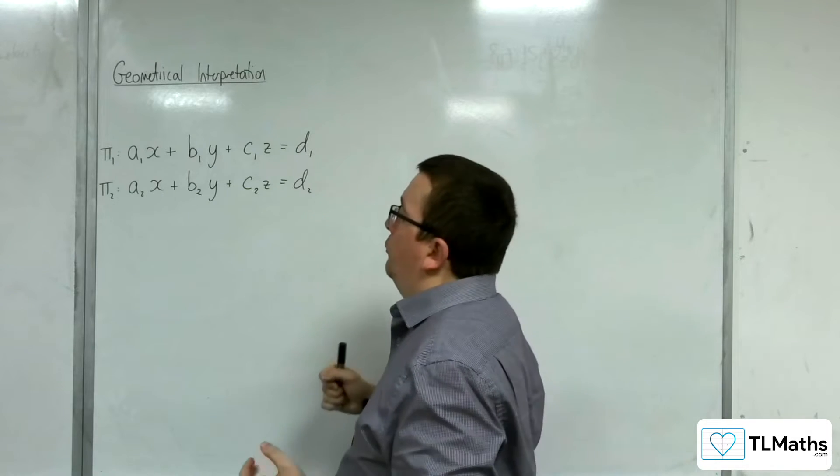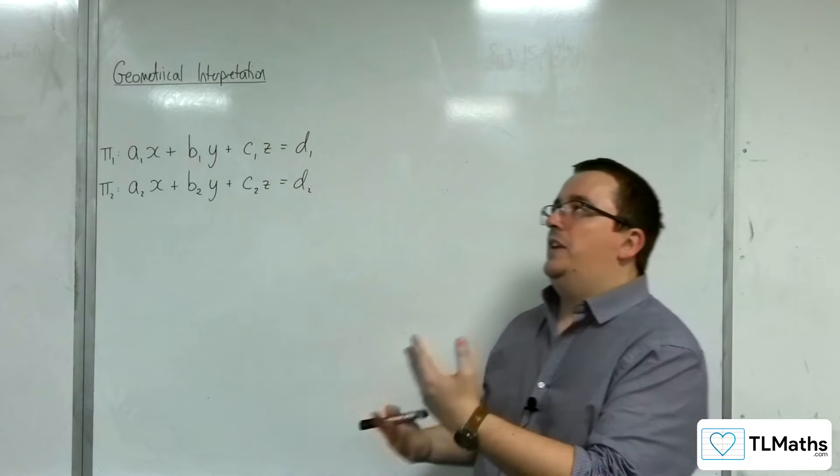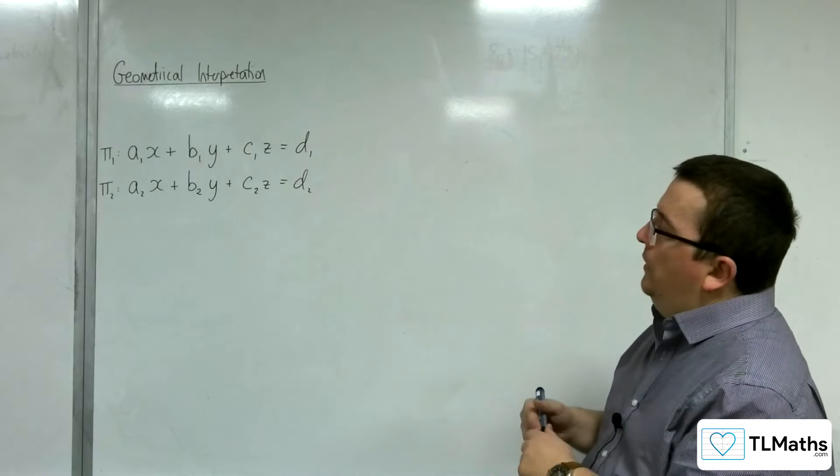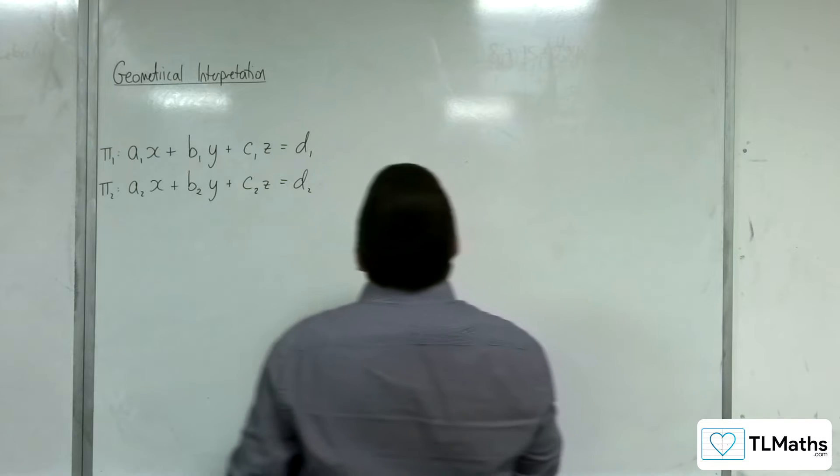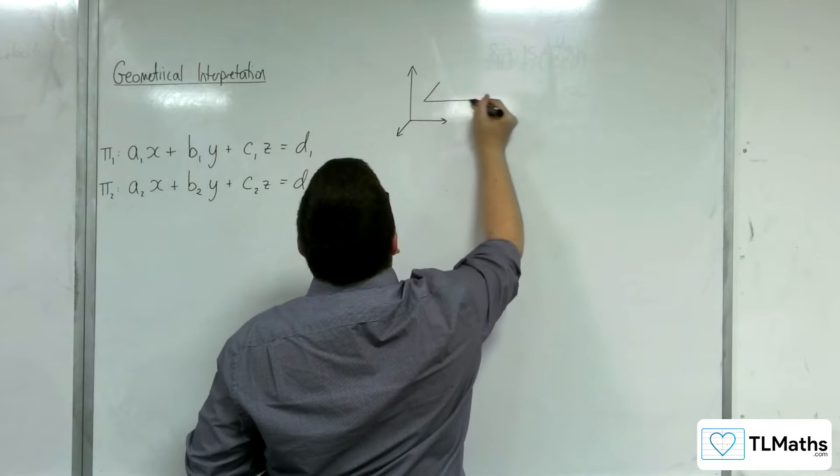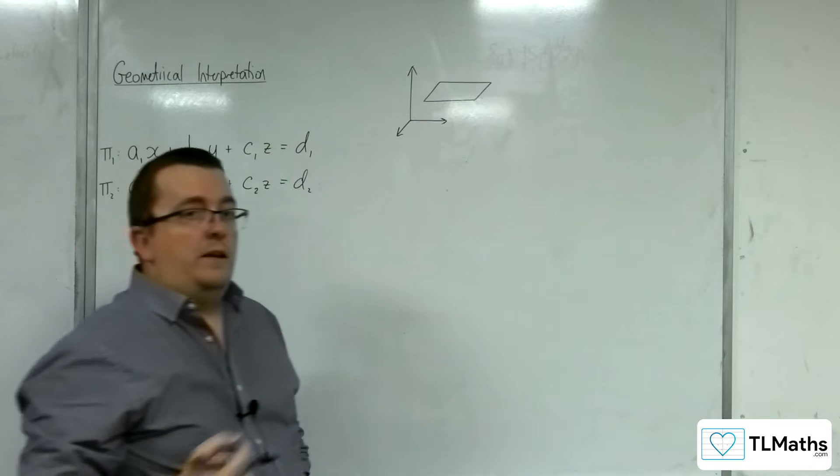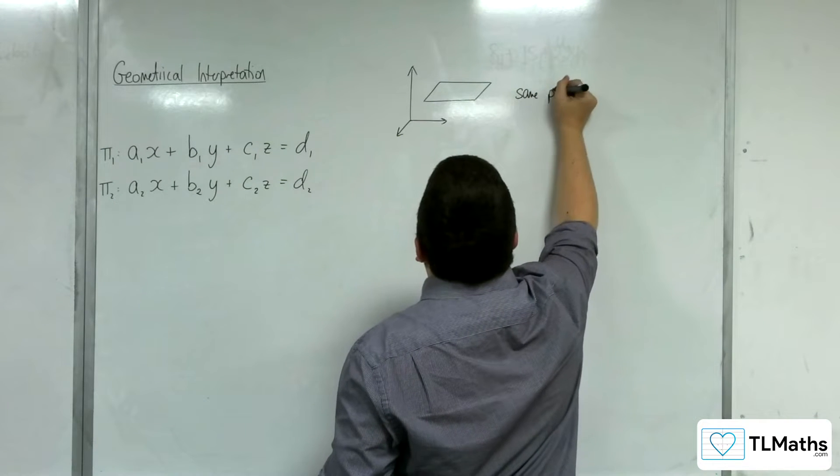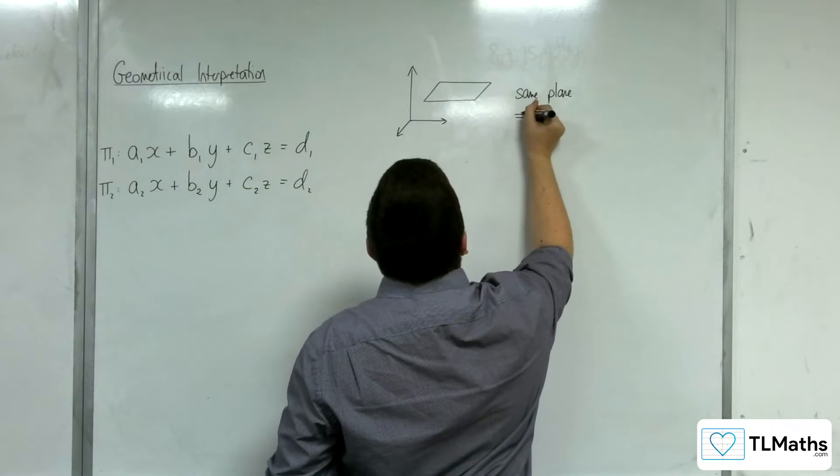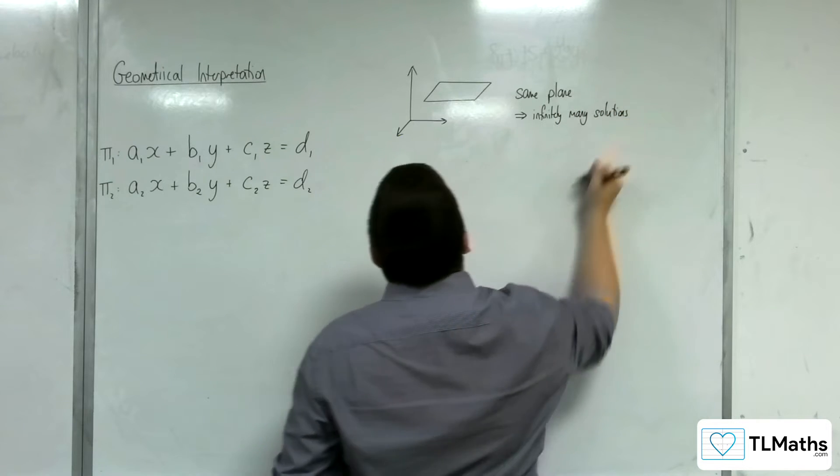So these two equations would represent two separate planes in three-dimensional space. What I want you to start thinking about is how do these two planes interact, what are the possibilities here. If we just have two planes, then one possibility is that your two planes are actually precisely the same plane. It's a trivial situation, but they could be the same thing. The consequence is that if that's the case, then there are infinitely many solutions.